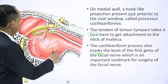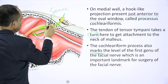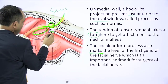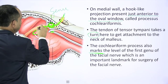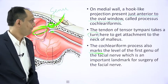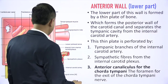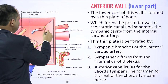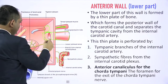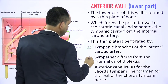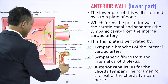The processus cochleariformis marks the level of the first genu of the facial nerve, which is an important intraoperative landmark for identification of the geniculate ganglion present on the first turn of the facial nerve. The lower part of the anterior wall, which is a thin bony plate, is perforated by three structures: the tympanic branch of the internal carotid artery, the sympathetic plexus around the internal carotid artery, and the anterior canaliculus.